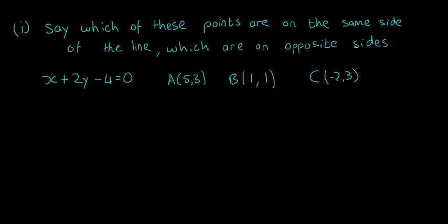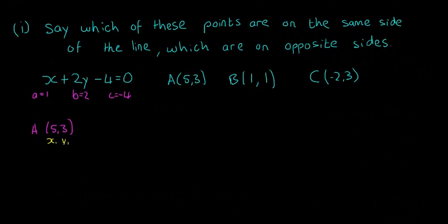The way we're going to do that is by using the formula and observing whether the result is plus or minus. First, I'll label the values: a equals 1, b equals 2, and c equals minus 4. I'm going to write the formula once: D equals ax₁ plus by₁ plus c, divided by the square root of a squared plus b squared.